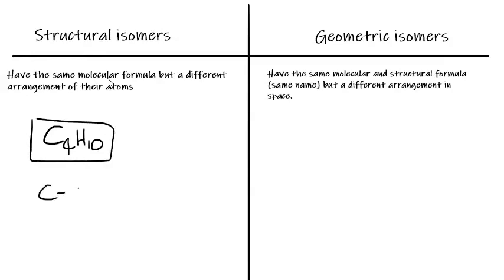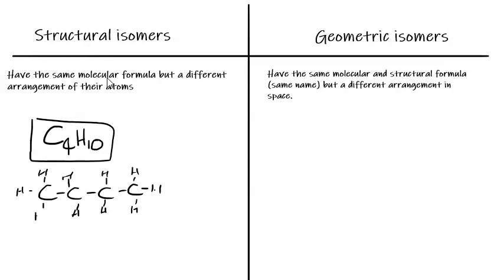The first obvious way is that we could do a straight chain of four carbons, and then we could count up — one through ten — ten hydrogens. So this has got four carbons and ten hydrogens. This would be butane.